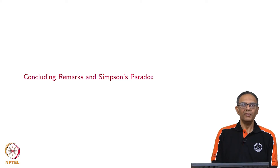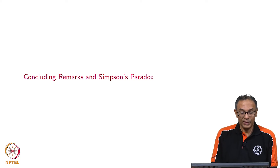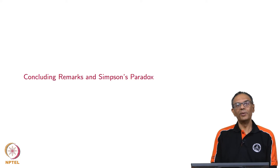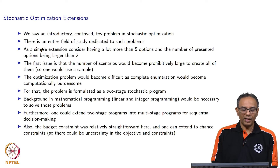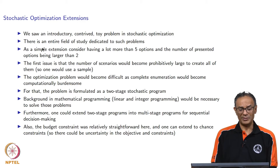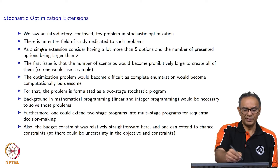In this lecture, we first start by making some concluding remarks. Nobody starts with the concluding remarks, but this time we do. And then we talk about Simpson's paradox. When we talk about stochastic optimization, the problem that we saw was a baby problem. We really looked at a very introductory level, a problem that was completely contrived.